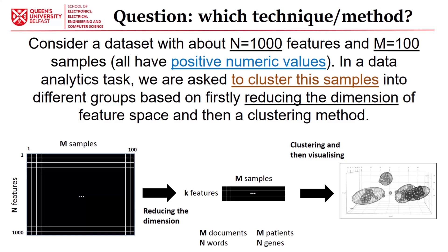The aim of NMF is projection — reducing the dimension — as well as clustering. NMF can actually provide more clustering characteristics compared to PCA. We are asked to cluster samples into different groups by first reducing the dimensions of the feature space and then applying a clustering method. With features one to one thousand and 100 samples, the aim is reducing the dataset to K features and M samples, then visualizing using PCA with cluster labels from NMF or any other clustering technique.